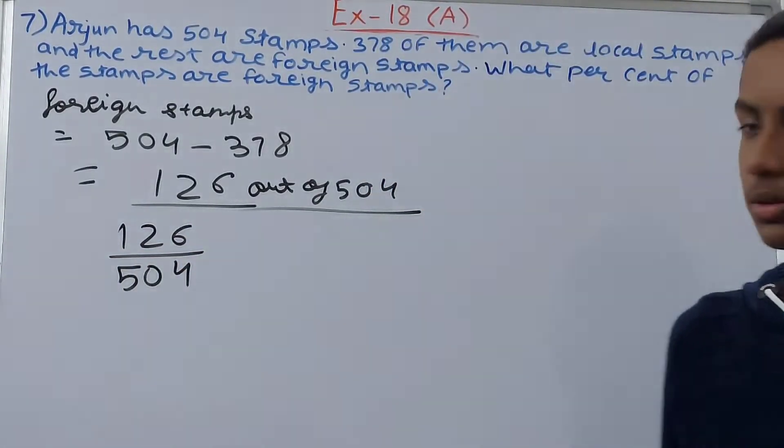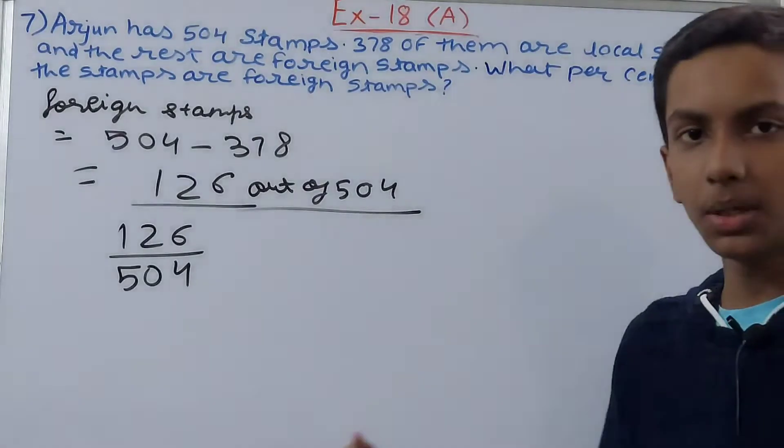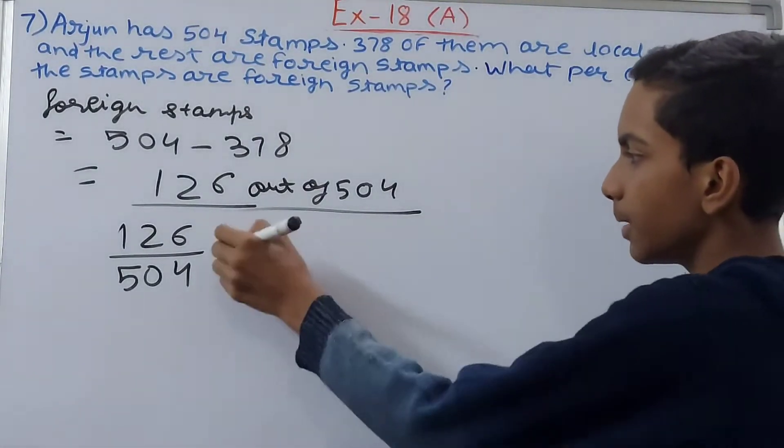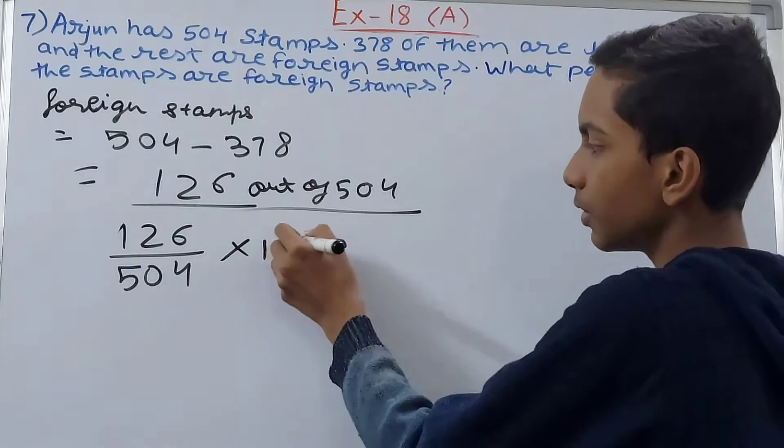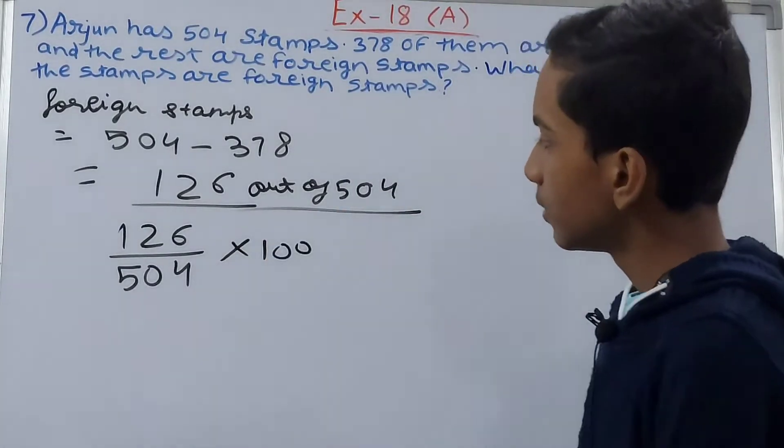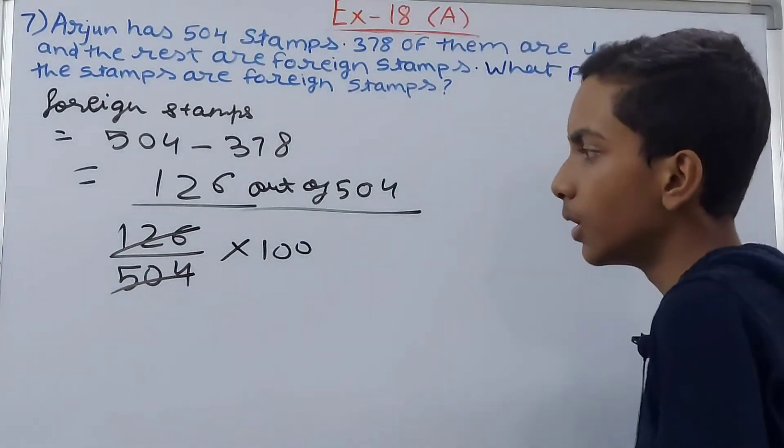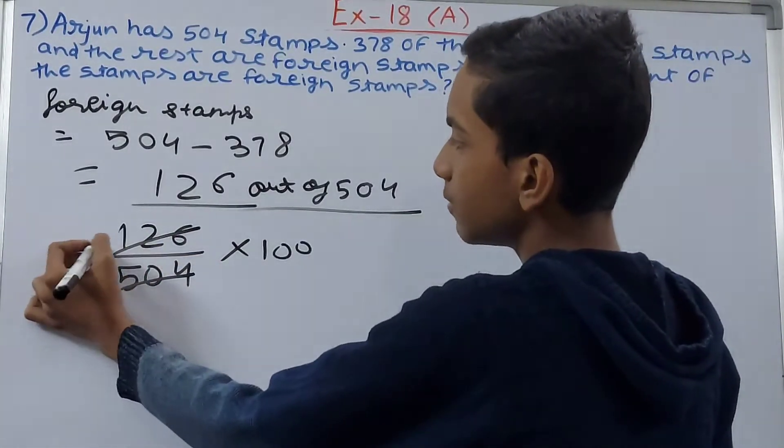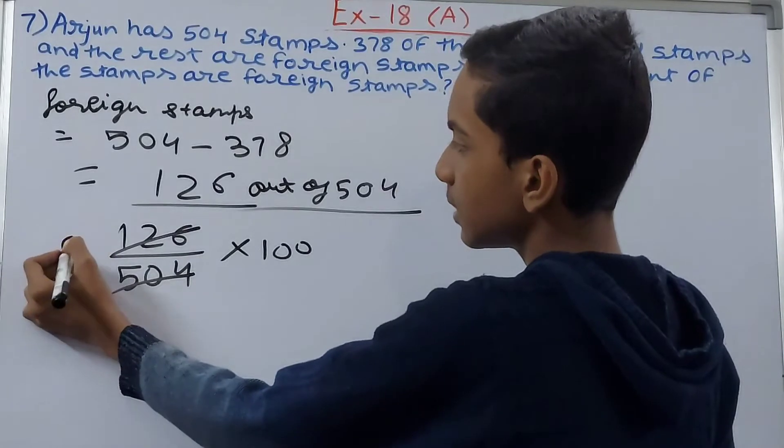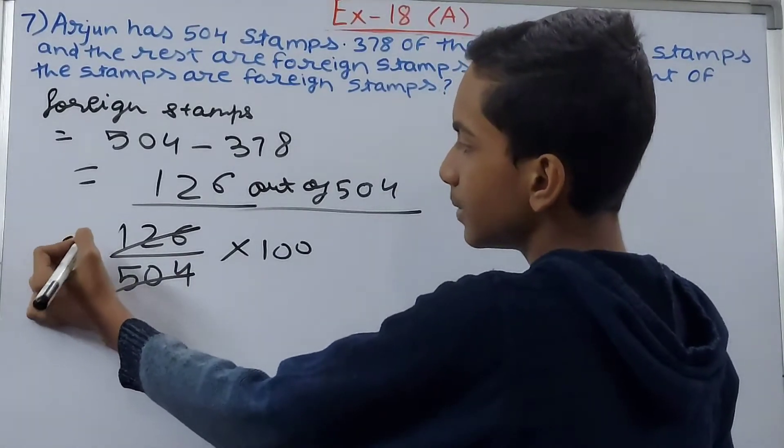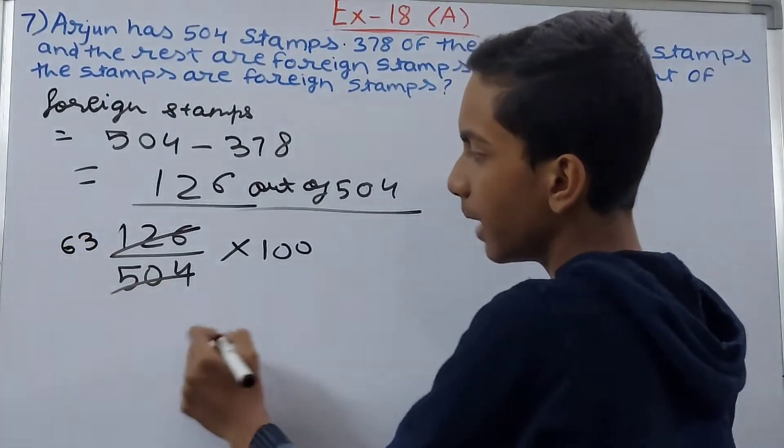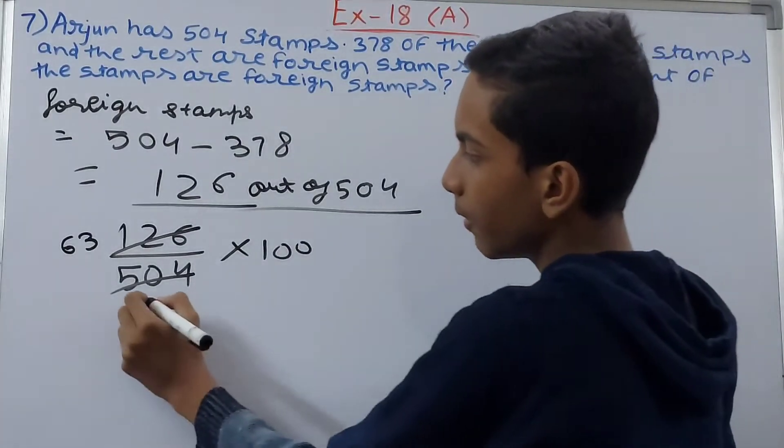Now convert this to a percentage by multiplying by 100. Let's solve this. I'll cancel 126 and 504. This goes 6 times, giving us 63, and with 100 we get 252. Now, can 63 and 252 be cancelled? Yes, of course.